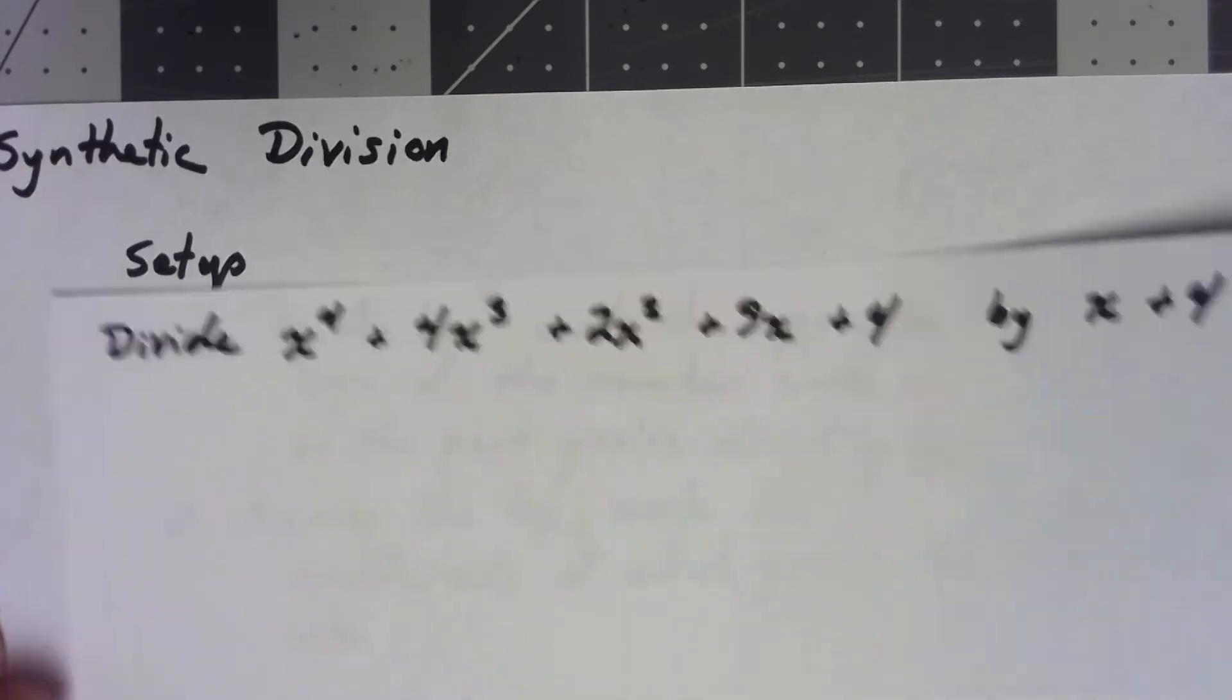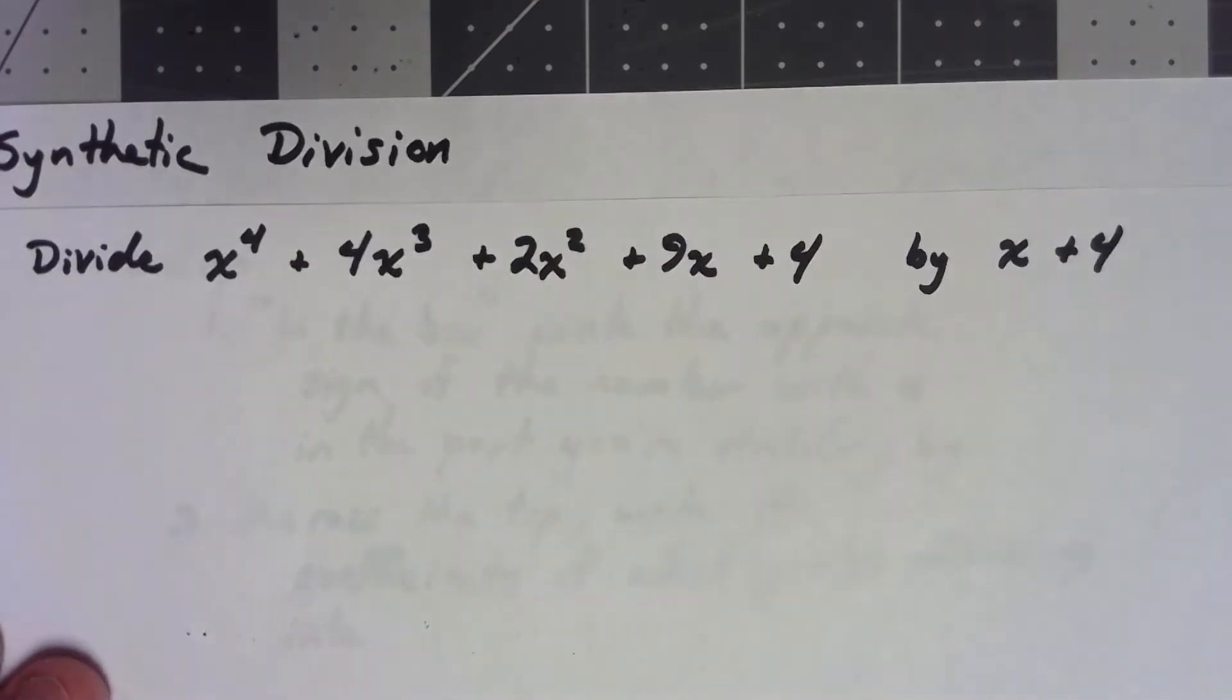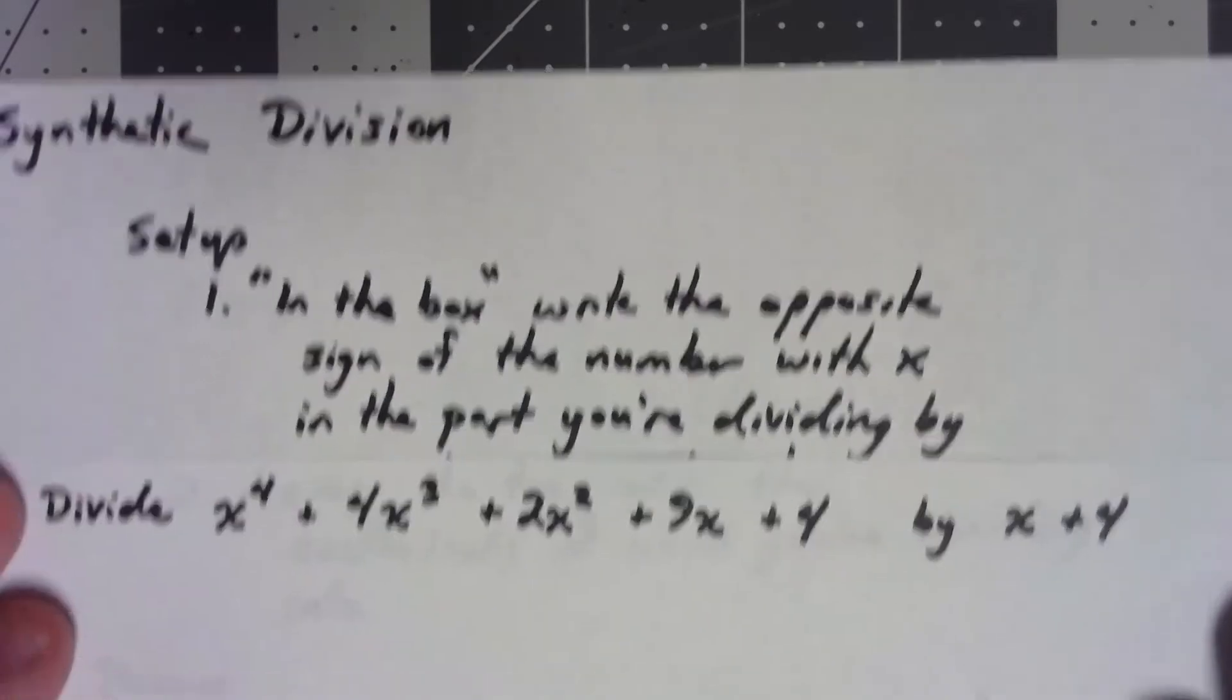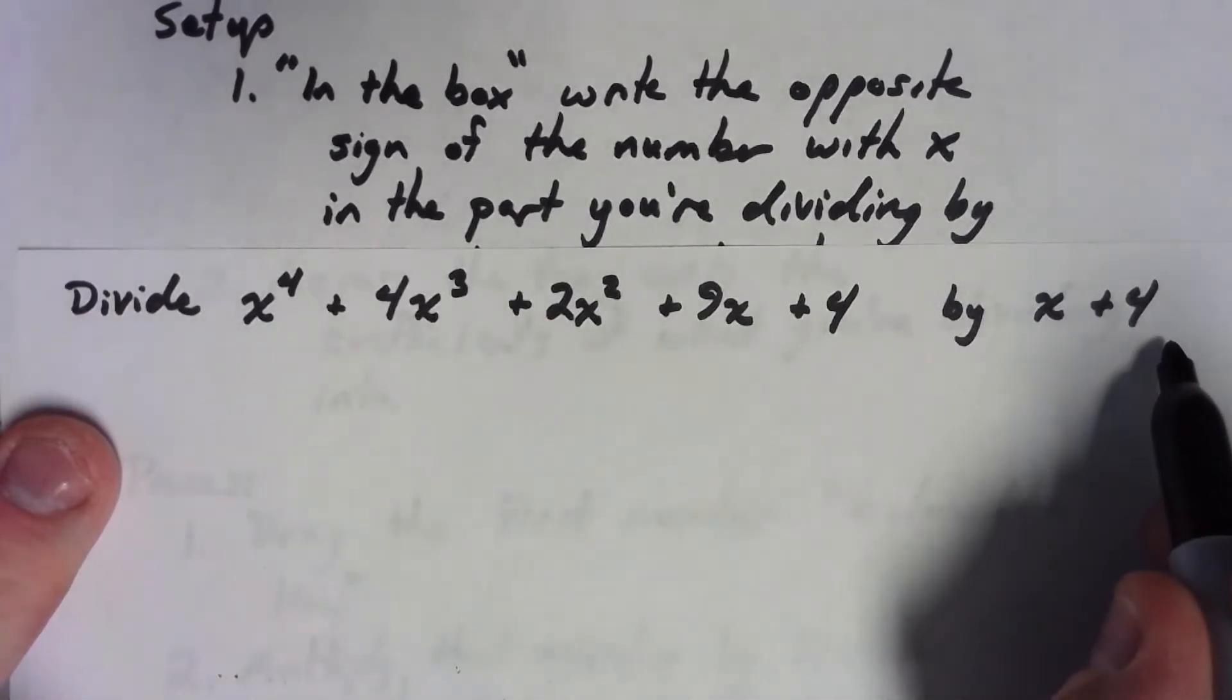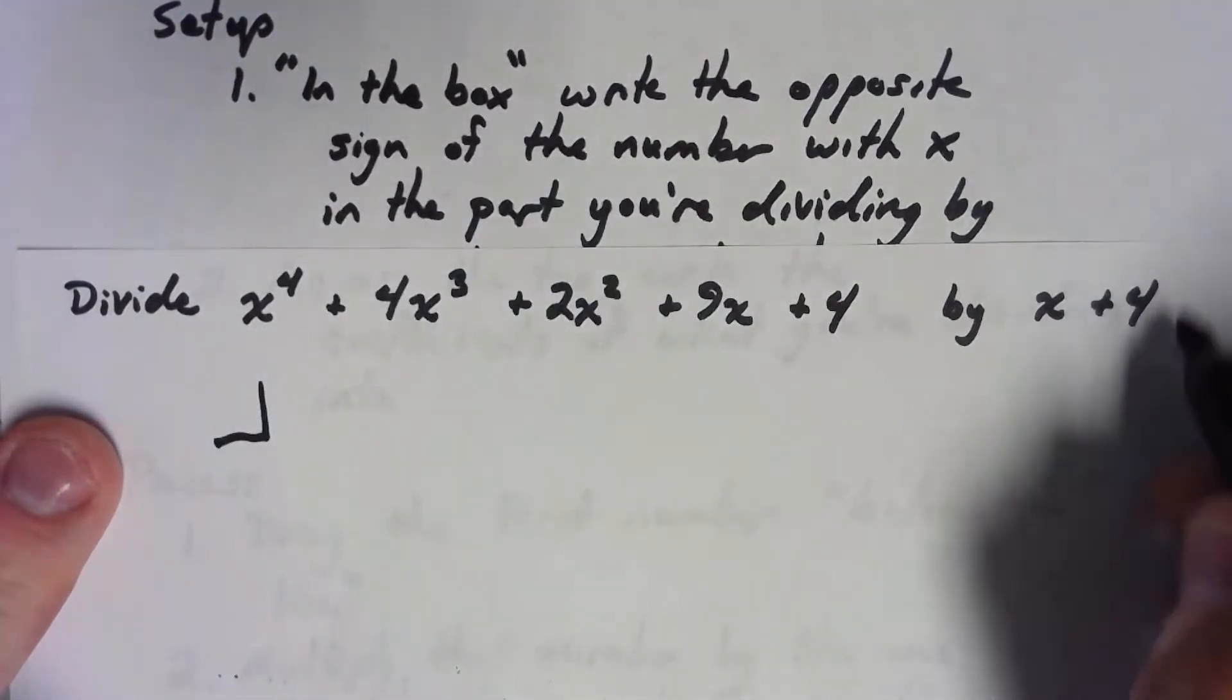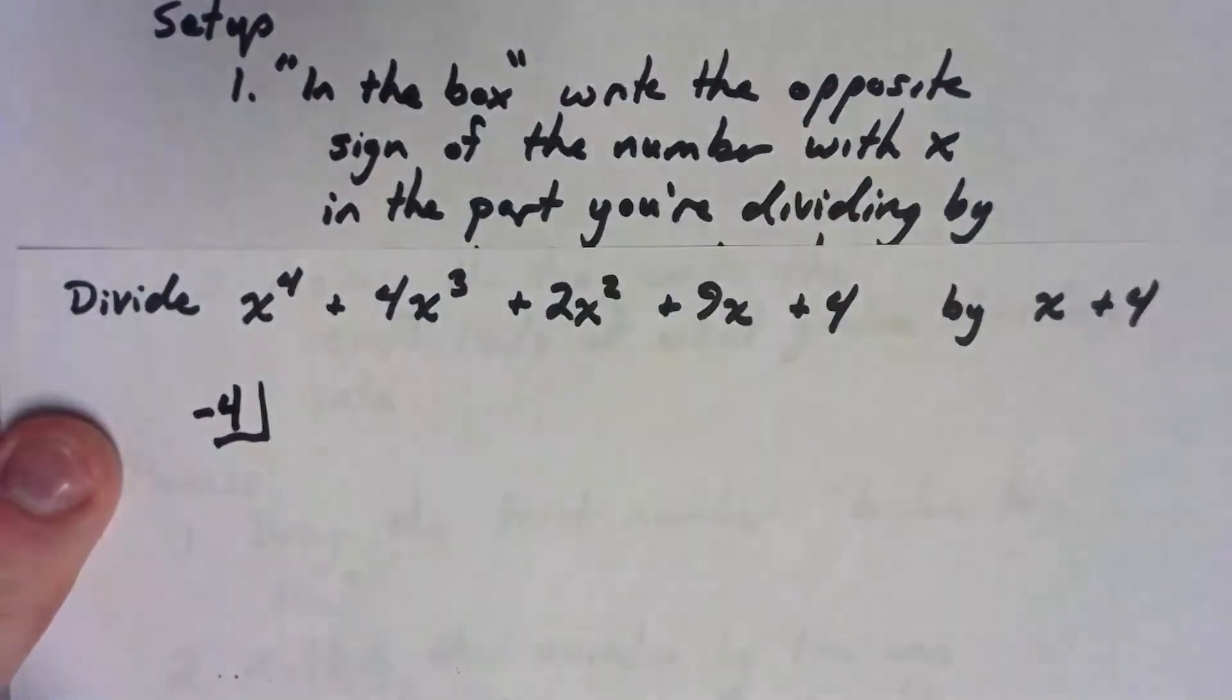So let's take a look at the first problem we did in the last video. We're going to be dividing x to the fourth plus 4x cubed plus 2x squared plus 9x plus 4 by x plus 4. The first thing is we create a box, and in it, we write the opposite sign of the number with x in the part we're dividing by. So we're dividing by x plus 4 here. I'm going to create a box. The number is plus 4, but in my box, I write the opposite sign. I write a negative 4.